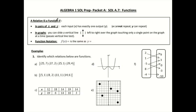A relation is a function if, when it's in pairs of x and y, each input or x has exactly one output or y. x cannot repeat in this situation. When we look at graphs, you can slide a vertical line — which is up and down — from left to right over the graph, touching only a single point on the graph at a time. This means it passes the vertical line test. Function notation is something you may see. It looks like f of x equals, which is the same as y equals.